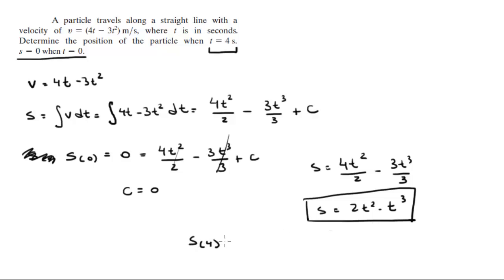So s when t equals 4, you just replace the t for the 4 and you solve and you get that it is equal to negative 32 meters.